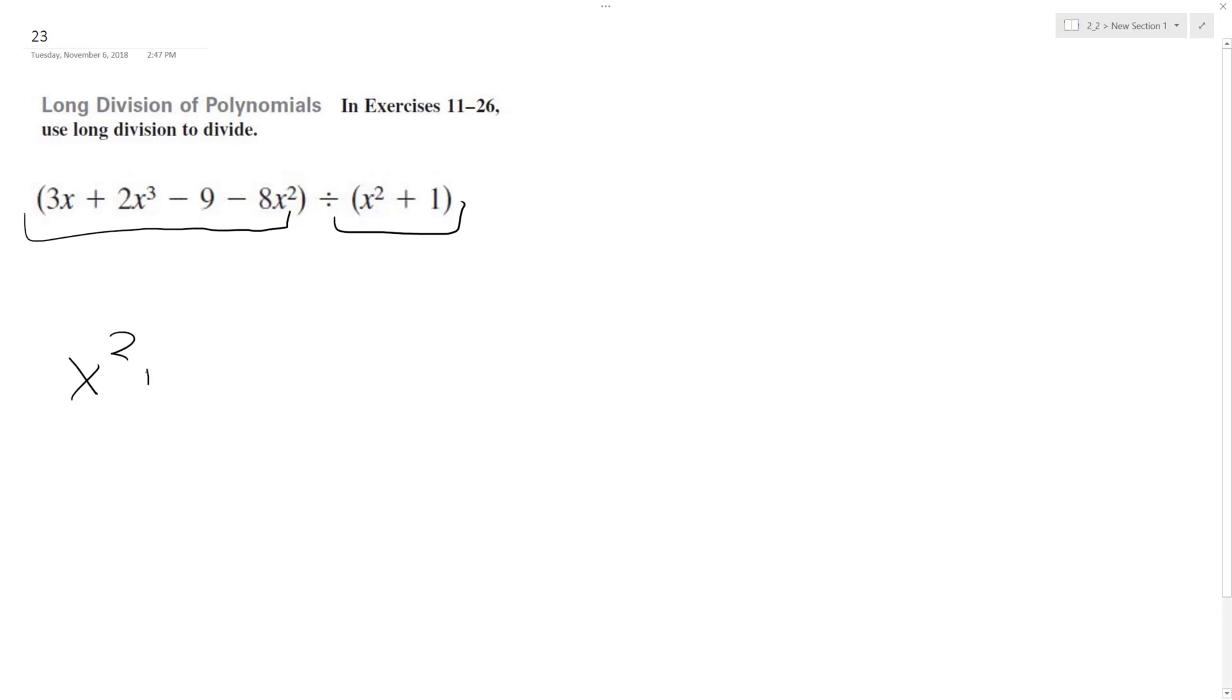Starting off here, I'm going to use placeholders, so 0x plus 1. And then over here, I need to rearrange this from highest order to least. So 2x³ minus 8x² plus 3x minus 9.